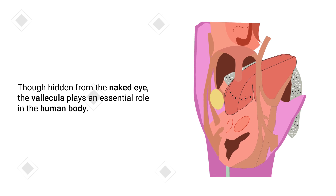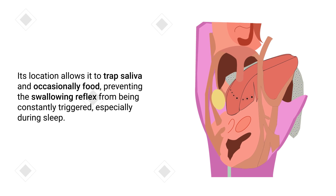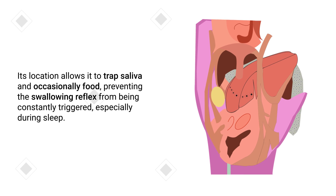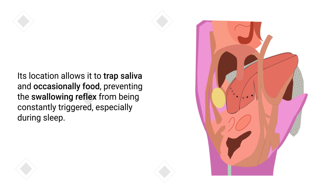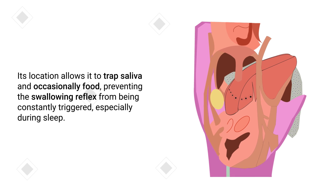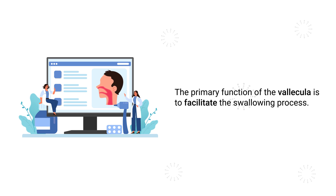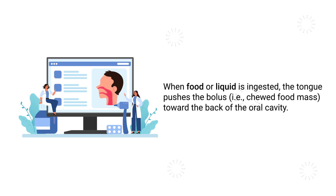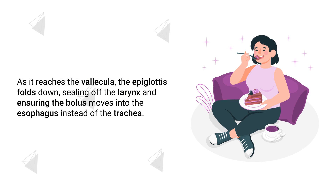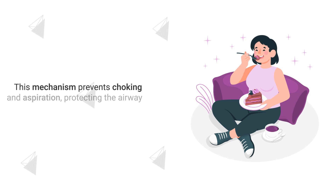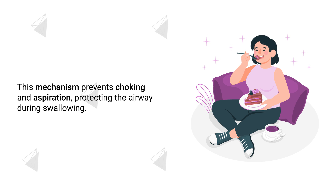The vallecula plays an essential role in the human body. Its location allows it to trap saliva and occasionally food, preventing the swallowing reflex from being constantly triggered, especially during sleep. The primary function of the vallecula is to facilitate the swallowing process. When food or liquid is ingested, the tongue pushes the bolus of food towards the back of the oral cavity. As it reaches the vallecula, the epiglottis folds down, sealing off the larynx and ensuring the bolus moves into the esophagus instead of the trachea, preventing choking and aspiration.